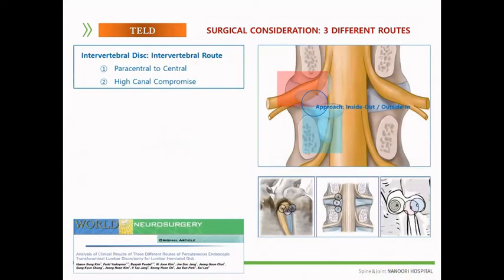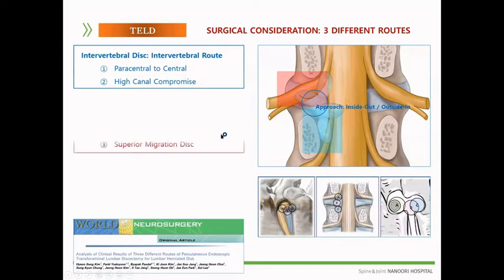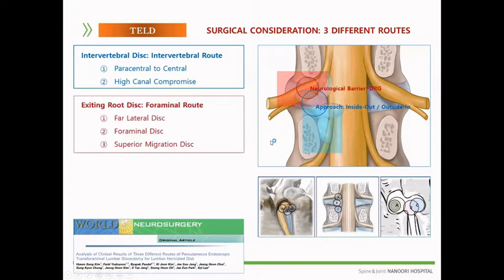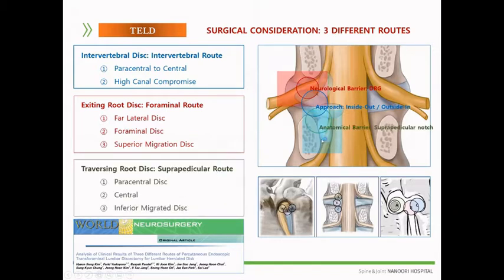Another thing to look out for in the transforaminal endoscopic spine approach is that there are three different approach routes. There is an intervertebral route, which is generally applied; a foraminal route that can be used effectively for foraminal disc and supra-migration disc; and a suprapedicular route that can be used effectively for paracentral and inferior migratory disc.